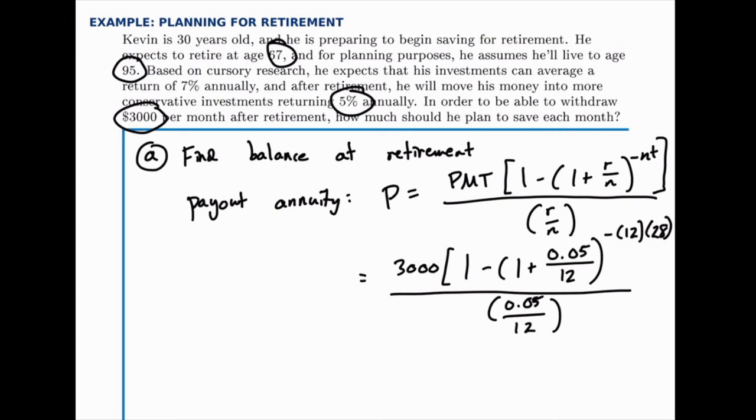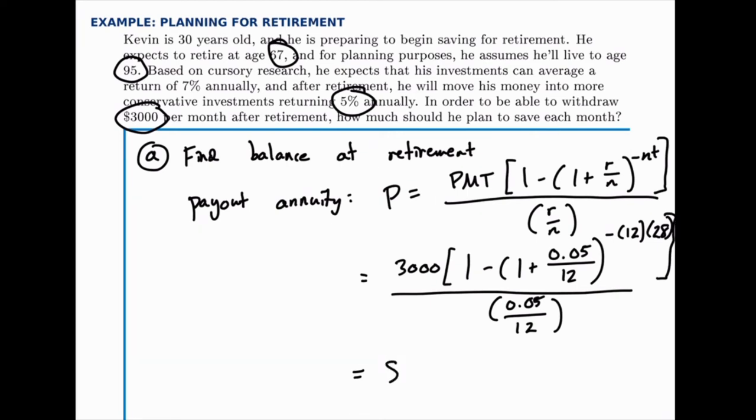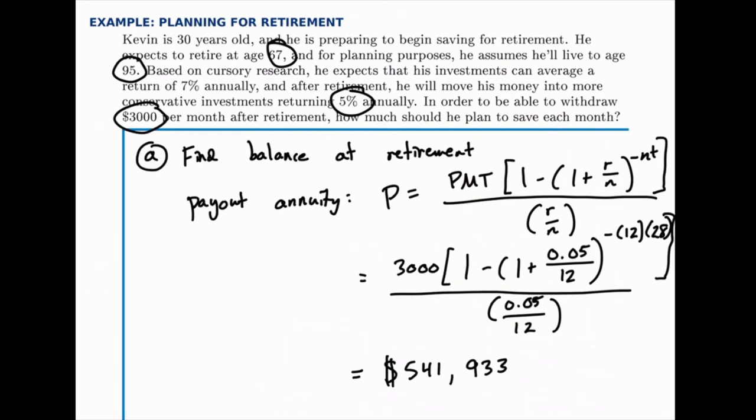Once we've plugged all the numbers in, all we have to do is simplify this. So if we take to the calculator, and plug all these values in, the number you should come up with for the balance at the moment of retirement should be about $542,000. $541,933. And we'll drop off the cents for this. We'll round to the nearest dollar. So the balance that he needs at the moment of retirement is about $542,000.